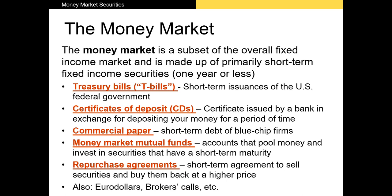Medium-term is often described as one to five or one to ten years, while long-term is anything with a maturity beyond that. Any security that matures in a year or less is referred to as a money market security. This includes treasury bills, or T-bills for short. Treasury bills are the short-term debt of the U.S. federal government — you'll undoubtedly discuss them in your financial markets course.